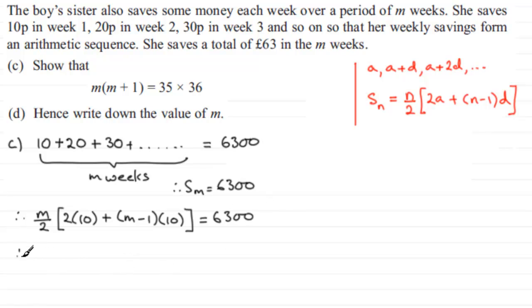So we've got (m/2), and in the square bracket here we've got 20, and then we've got 10m minus 10, and that equals 6,300. And if I tidy up what's inside the square bracket, we've got 10m, and then 20 minus 10, that's going to be plus 10, and that's equal to 6,300.